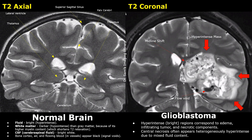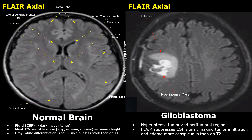Now we will look at FLAIR sequences. In a FLAIR image, the cerebrospinal fluid appears dark — there is no MR signal from it. However, edema and gliosis will still appear bright in a FLAIR image. The gray-white matter differentiation is still visible but less stark than on T1.